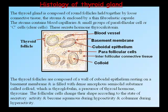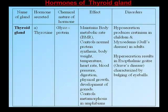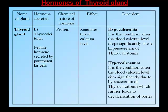The follicular cells change shape according to secretory activity, becoming squamous during hypoactivity and columnar during hyperactivity. The thyroid gland synthesizes, stores, and discharges thyroid hormones: thyroxin (T4, also called tetraiodothyronine), triiodothyronine (T3), and thyrocalcitonin. Thyroxin is a glycoprotein that maintains the basal metabolic rate (BMR), controls normal protein synthesis, body weight, temperature, heart rate, blood pressure, digestion, physical growth, development of gonads, and controls metamorphosis in amphibians. Disorders: hyposecretion causes cretinism in children and myxedema (Gull's disease) in adults; hypersecretion results in exophthalmic goiter (Graves' disease), characterized by bulging eyeballs.